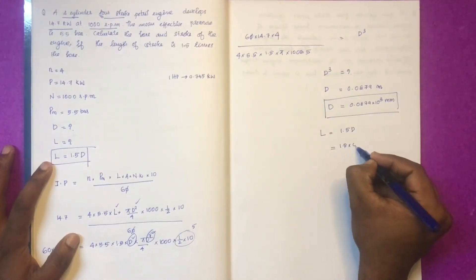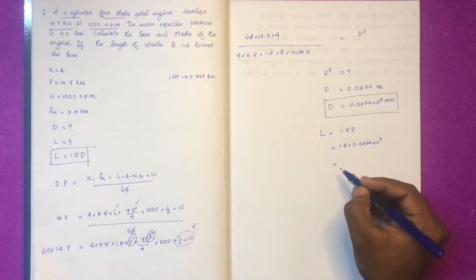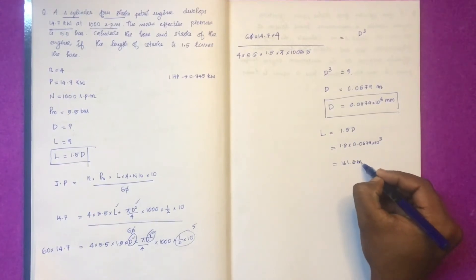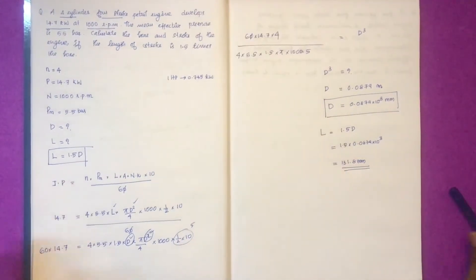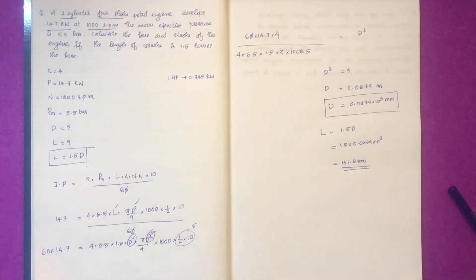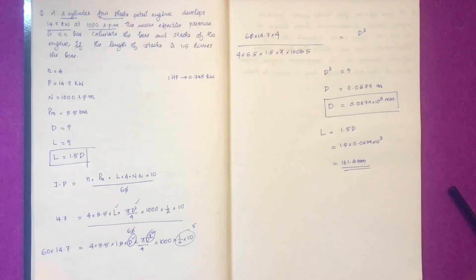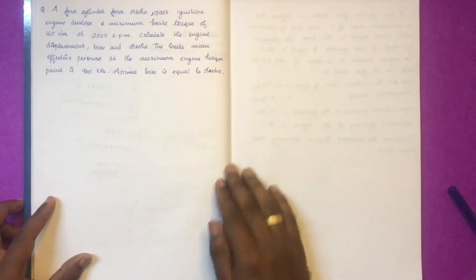D is equal to 0.0879 m, which is 103 mm diameter. L is equal to 1.5 times 0.0879, so the length of the stroke is 131.8 mm. Now we need to know the same equation and verify the answer.